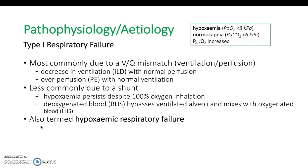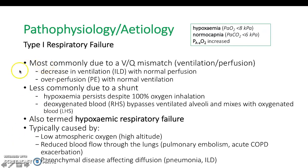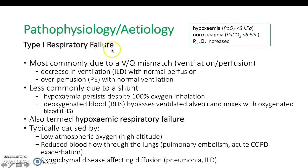Type 1 can also be termed hypoxemic respiratory failure because the main abnormality is low oxygen. The causes can be broken into three categories: atmospheric oxygen entering the alveoli being reduced — for example, at high altitude where oxygen is at a low partial pressure; the alveoli themselves being thickened due to parenchymal disease such as interstitial lung disease or pneumonia, impairing diffusion; or reduced blood flow to the alveoli, as in pulmonary embolism. If any of these three are affected, the patient presents with type 1 respiratory failure.